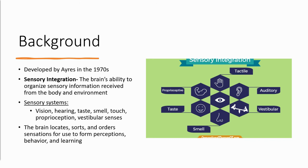The sensory systems this theory pertains to include the ones you're used to hearing — vision, hearing, taste, smell, and touch — and also proprioception and vestibular, which we'll discuss shortly. Essentially, what happens during sensory integration is that the brain locates, sorts, and orders sensations for use to form perceptions, behavior, and learning.